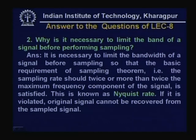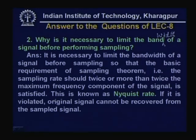Second question: Why is it necessary to limit the bandwidth of a signal before performing sampling? The basic requirement of the sampling theorem is that the sampling rate should be twice or more than twice the maximum frequency component of the signal — this is known as the Nyquist rate. If this is violated, the original signal cannot be recovered from the sampled signal, and it will suffer distortion known as aliasing error.